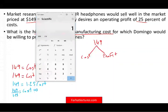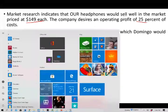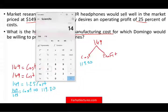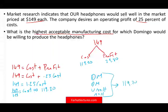Our cost is $149 ÷ 1.25 = $119.20. The profit is $149 − $119.20 = $29.80. This means that when we manufacture those headphones — including direct materials, direct labor, variable manufacturing overhead, and manufacturing overhead — the per-unit cost should not exceed $119.20. If the cost is lower, say $110, and we can still sell for $149, our profit will go up.